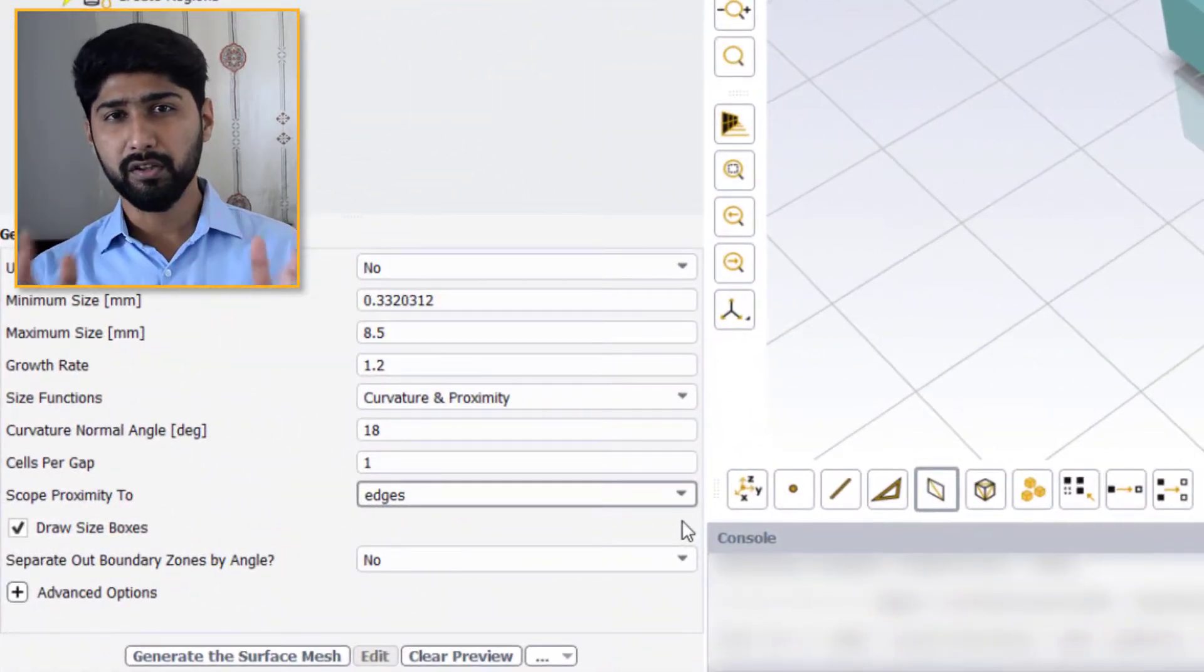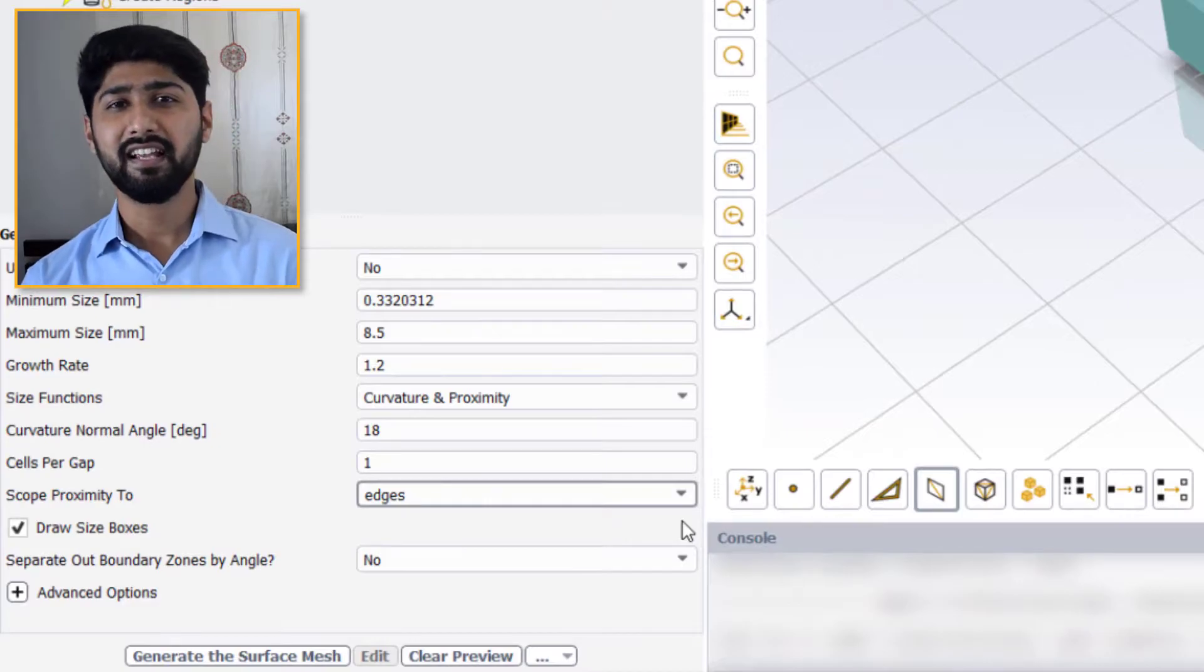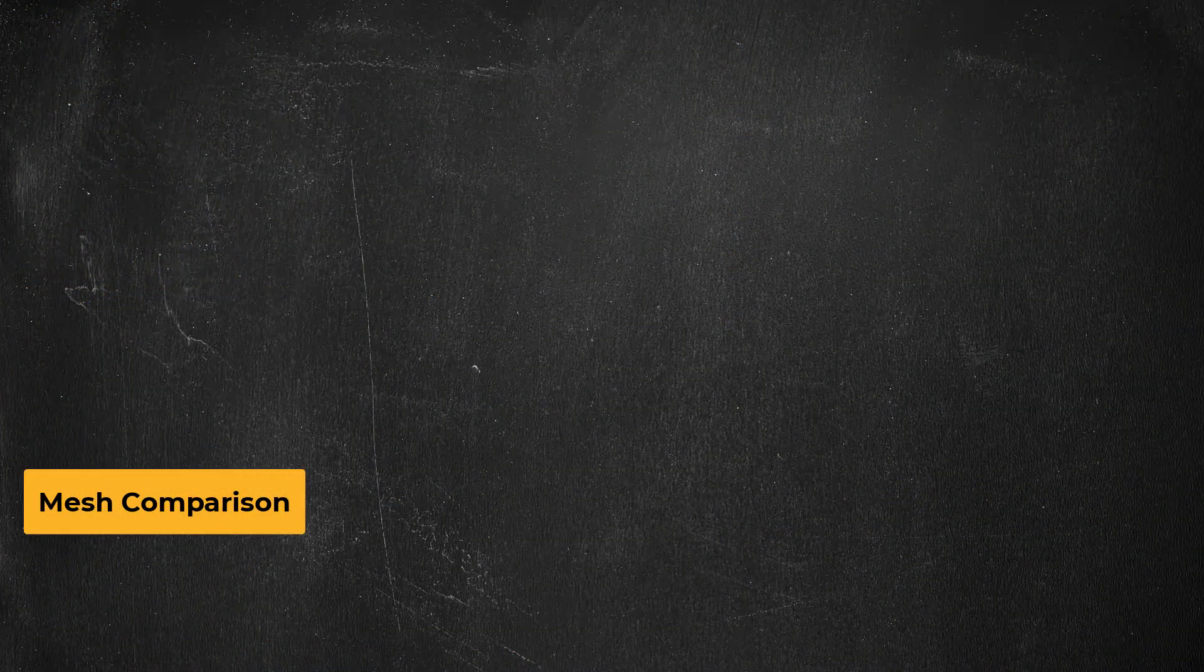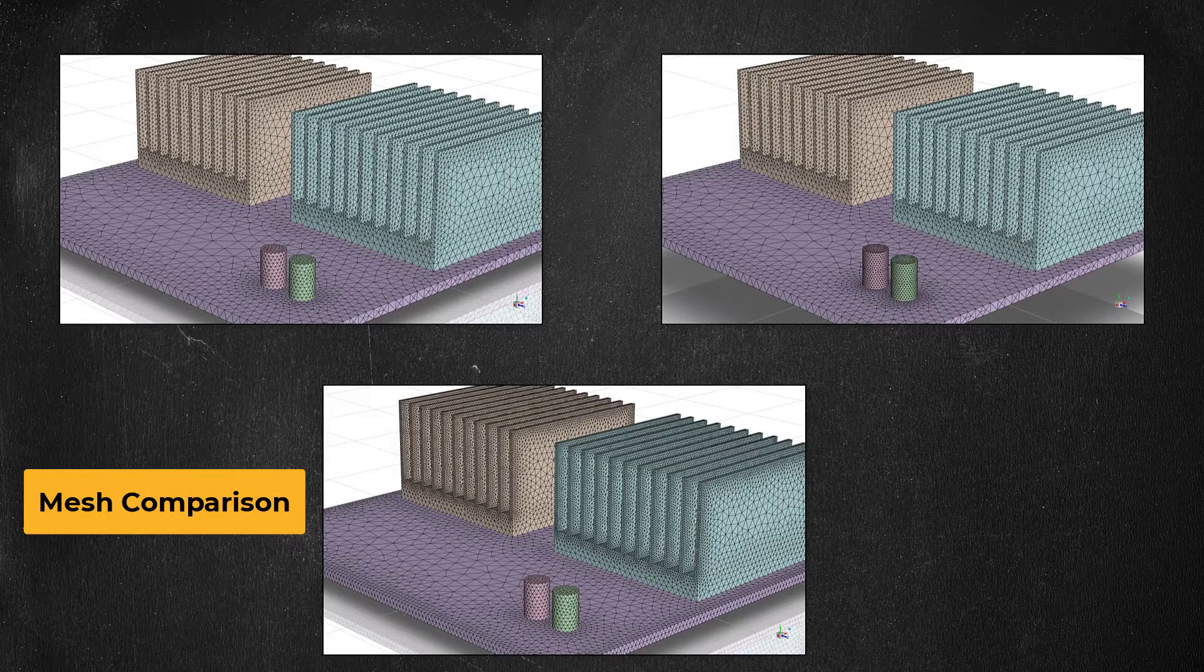Once satisfied with all the inputs, simply click the generate the surface mesh button to create the surface mesh for the model. Let's now look at three different meshes that were generated using different inputs.